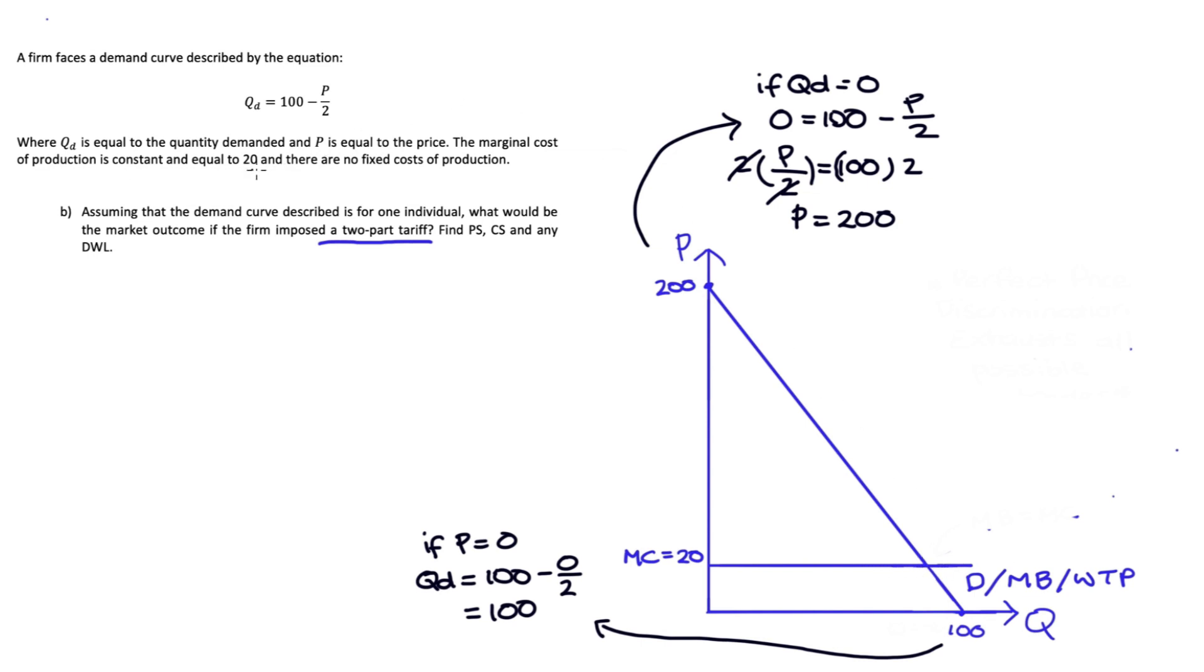When we set a two-part tariff, the firm is going to produce right up to where the demand curve intersects the marginal cost curve. At this intersection, marginal benefit equals marginal cost. This is what we call the efficient level of production, and it exhausts all possible trades in the market.